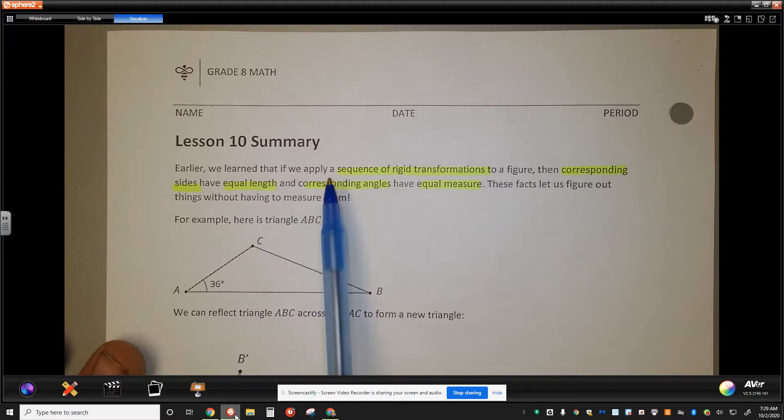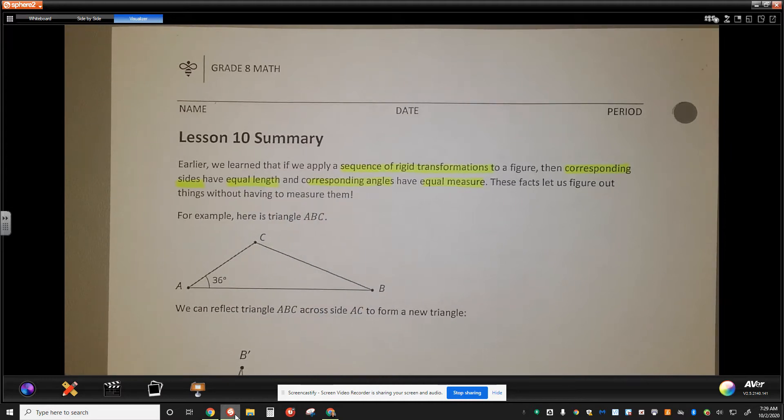We learned that if we apply a sequence of rigid motions, then corresponding sides have equal length and corresponding angles have equal measures. We also learned that by understanding these facts, we don't have to measure everything to figure out that things are equal to each other.